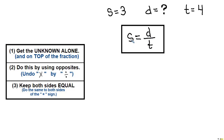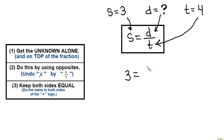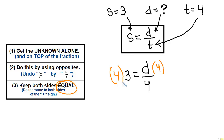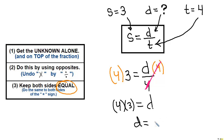This looks like a time-speed-distance problem. Speed equals 3, distance is what we're looking for, and time equals 4. So rewriting it: S, which is 3, equals D as the unknown over T equals 4 — so I put that in there. Now I've got to solve for D. Is D by itself and alone? Nope — there's a 4 there. We're dividing by 4, so the opposite of divide by 4 is multiply by 4. To keep both sides equal, I multiply the other side by 4 also. Multiplying by 4 and dividing by 4 reduces to 1. Rewriting: 4 times 3 equals D, so D equals 12.